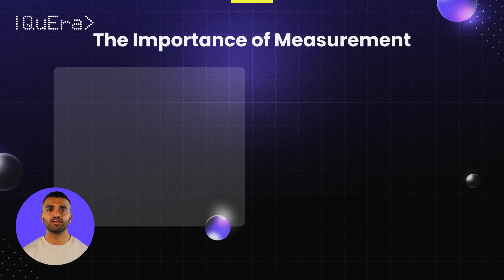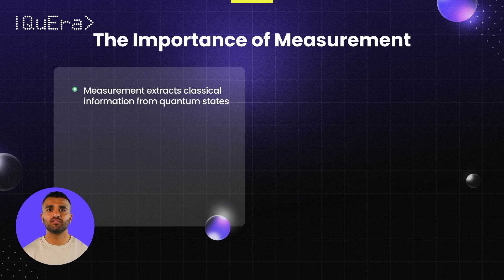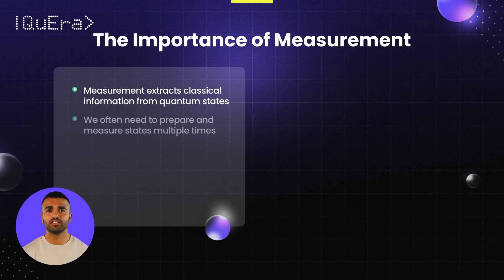Measurement is crucial as it allows us to extract usable classical information from quantum states, which is essential for solving problems in science and industry. Because quantum measurements are probabilistic, we often need to prepare and measure states multiple times to get accurate statistics.